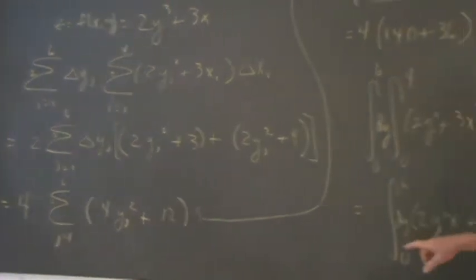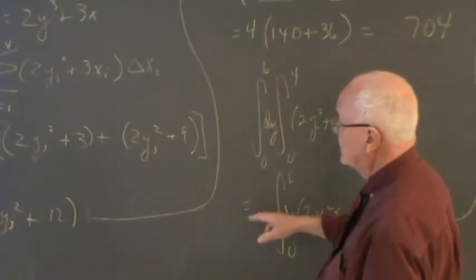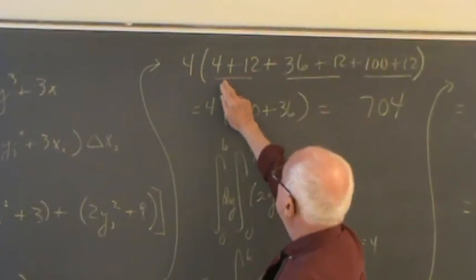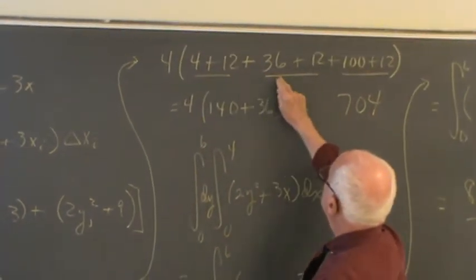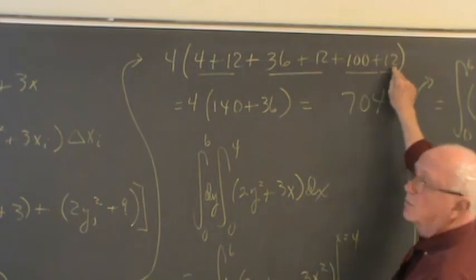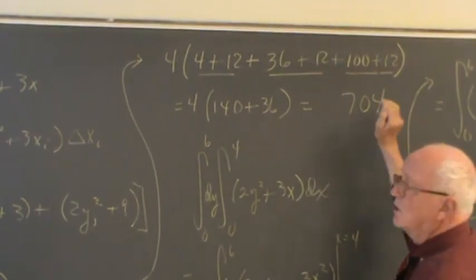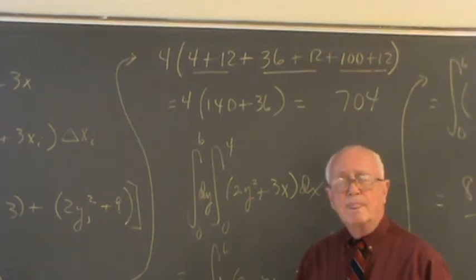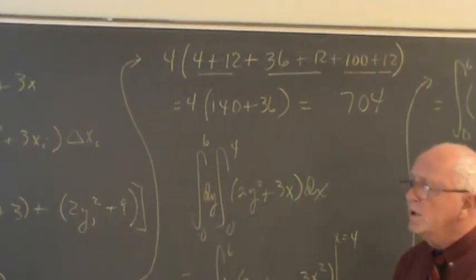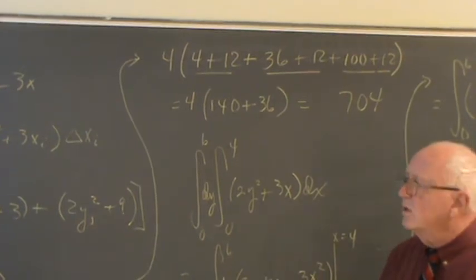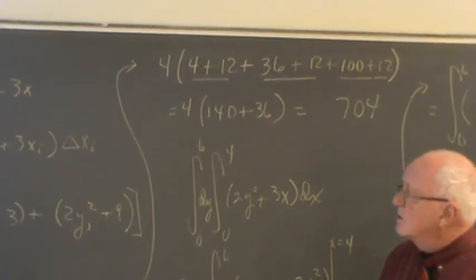Well, that brings us up when I evaluate this from 1 to 6 of 4 times 4 plus 12 plus 36 plus 12 plus 100 plus 12, giving me 4 times 140 plus 36, or 704. So 704 is my approximate volume underneath this curve using 6 rectangular vertical approximations.